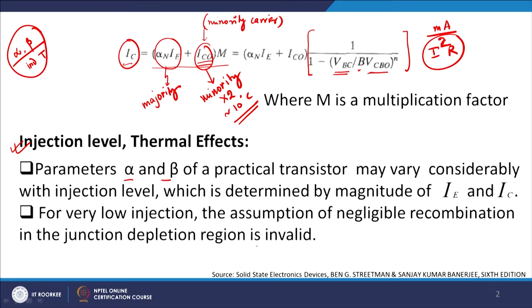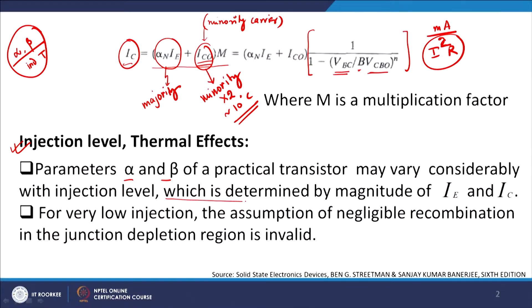Alpha and beta are depending on the value of temperature, and they also depend on the magnitude of IE and IC. At very low levels of injection — meaning when the bias is so small that even in an NPN transistor the number of electrons being injected onto the base side is relatively very small — that is defined as a very low level of injection.